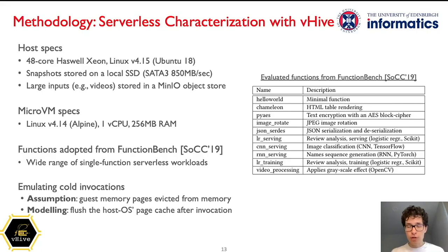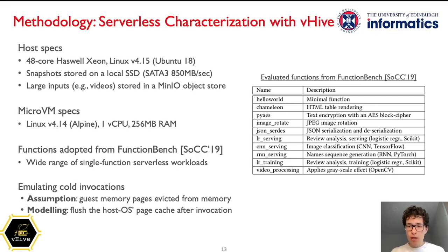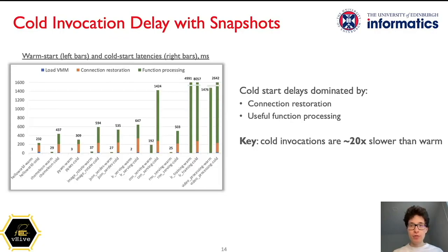For evaluation, we adopt functions from FunctionBench, a representative suite of various serverless functions written in Python. FunctionBench includes HTML rendering, encryption, image and video processing, serialization and deserialization of JSON, and several functions for machine learning inference and training. We dockerized all these functions as handles of Python gRPC servers. Finally, it is crucial to carefully model cold invocations. Since cold invocations happen rarely, most guest memory pages would be evicted by the time a new invocation arrives. To model this behavior, we explicitly flush the host operating system cache after each function invocation.